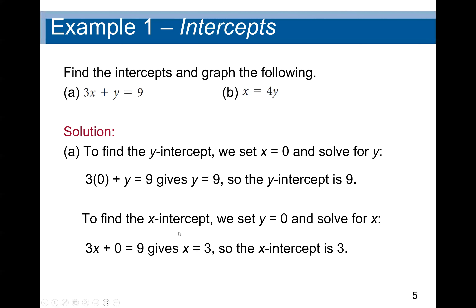To find the x-intercept, we set y equal to zero and solve for x. We get 3x + 0 = 9. Since 3 is multiplied by x, when you cross the equal sign it divides. So x equals nine divided by three, which gives us three. So the x-intercept is three.